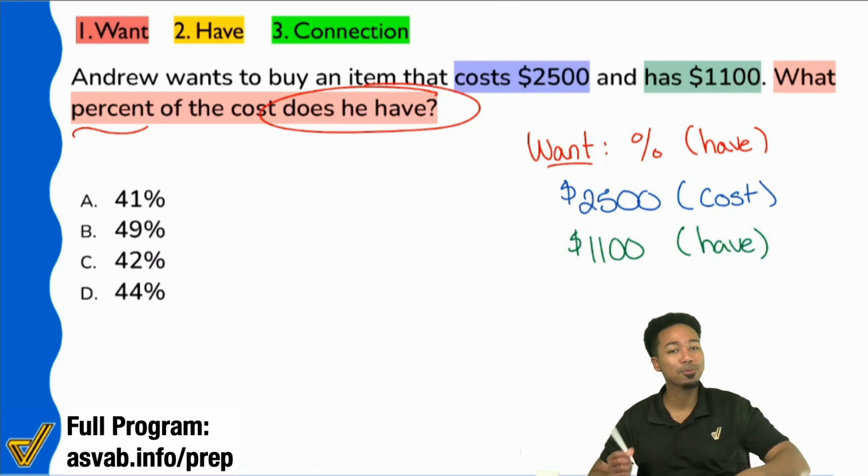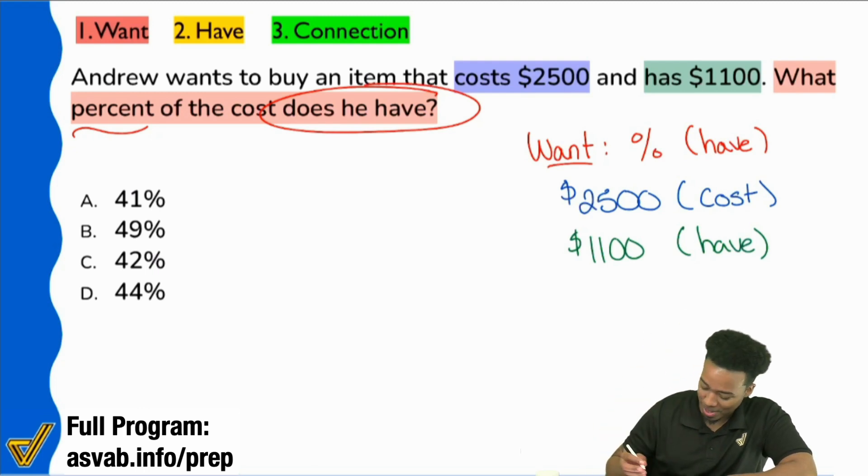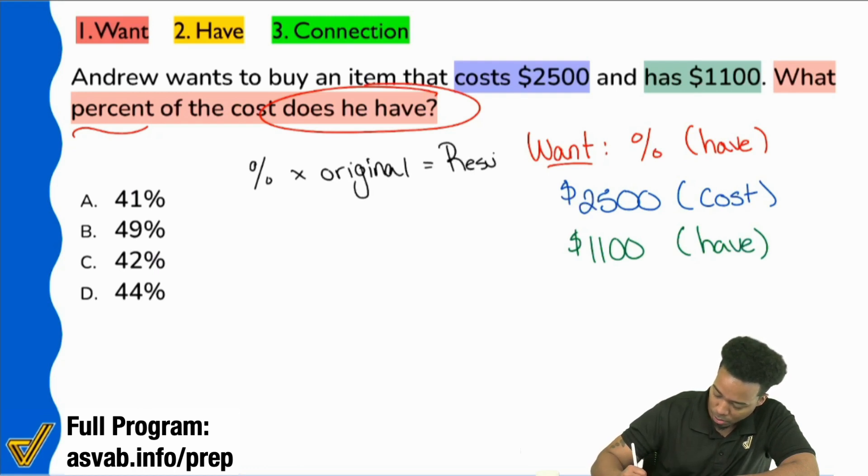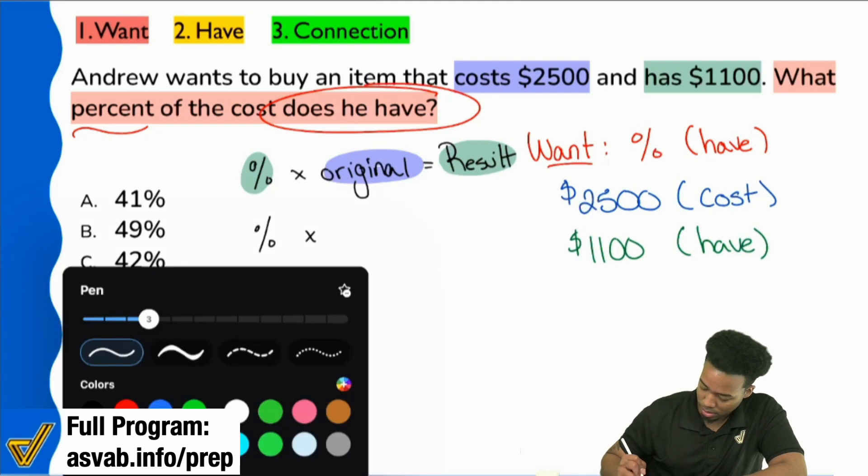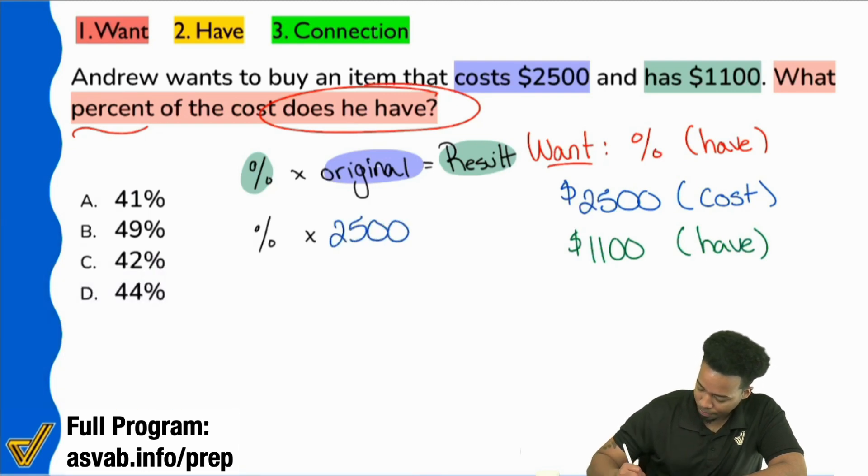Good. Because remember, the percent that we apply is the result that we get. Remember, got to keep with the formula here. We have to beat it into our heads because it's going to help us out in the future. So the percent times the original equals the results. These represent the same thing. So with that, we see that we're going to say, hey, the percent that we're looking for times, what's going to be the original? What's going to be the original? Yeah, the $2,500, the whole thing, the total cost of the item. Yeah, $2,500. So it's going to be right there. That's going to equal the result. Everybody, what's the result going to be? Right. That's going to be $1,100. Cool.